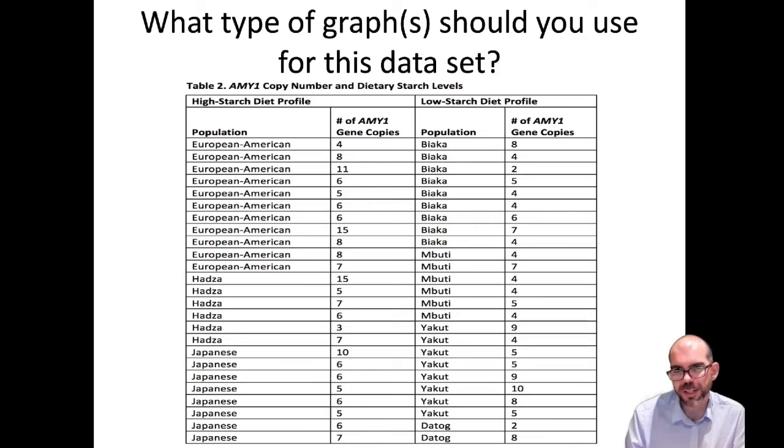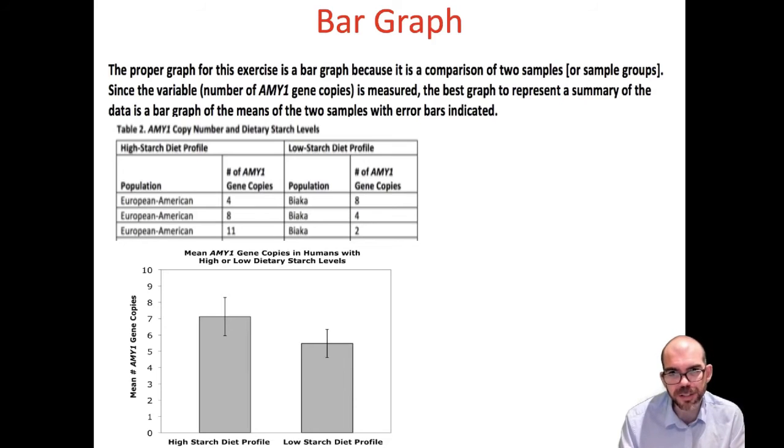What kind of graph should I use for this data set? Here I have a population, number of copy genes, another population, number of genes. And notice these populations are different groups. I have European-American, I have Hadassah, I have Japanese. I would use a bar graph for this. Here I'm looking at one variable, the number of AME1 gene copies, for different populations. So I'm comparing groups. And most of the time, if you have that data available to you, you want to draw error bars if you're provided that information. This is the typical kind of graph you would see on an FRQ.